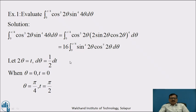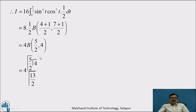Therefore dθ equal to (1/2) dt. Changing the limits: when θ = 0, t = 0; when θ = π/4, t = π/2. Therefore the given integral I equals 16 times the integration from 0 to π/2 of sin⁴t · cos⁷t · (1/2) dt. This is the second form of Beta Function with p = 4 and q = 7, which equals 8 · (1/2) · Beta((4+1)/2, (7+1)/2), that is 4 · Beta(5/2, 4).